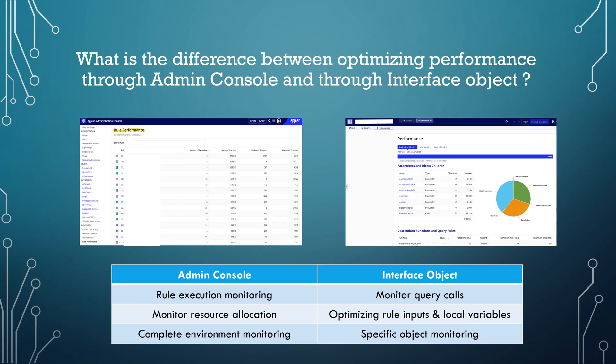In the interface object, we have a Performance tab which gives you insight about evaluation metrics, save metrics, and query metrics. It helps you monitor each and every query call, query rules, and the functions being called along with how much time they are taking. However, it is only relevant to a specific interface object, whereas optimizing performance through the admin console gives you insight into the complete environment.